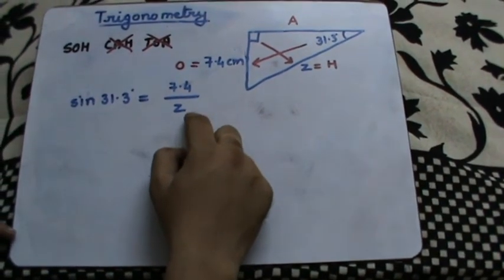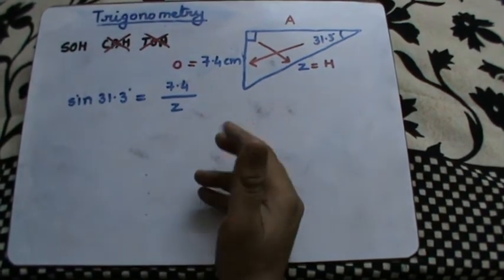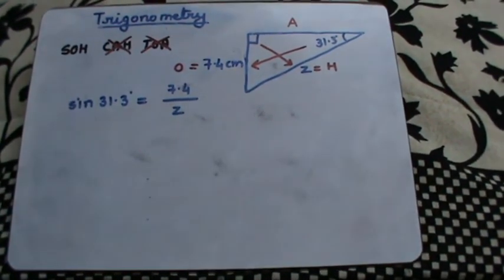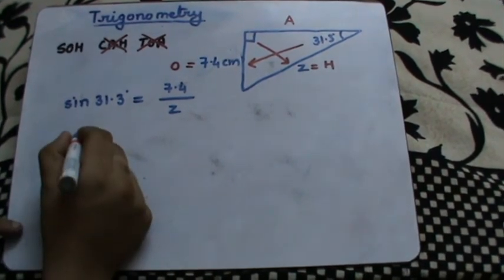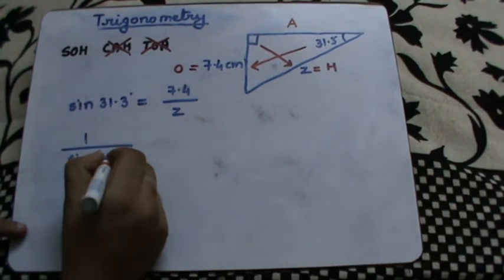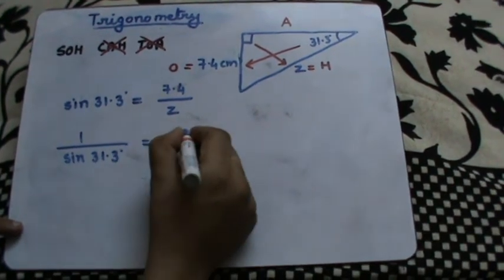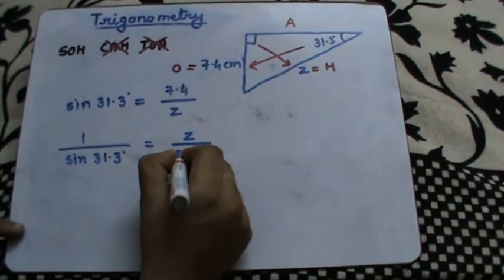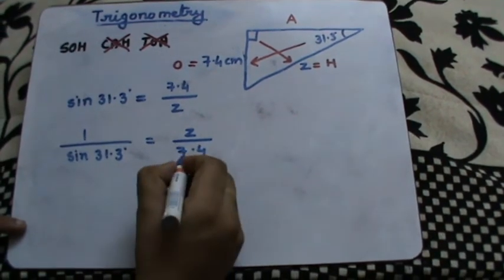Taking the reciprocal on both sides, I get 1 over sin 31.3° equals Z over 7.4. Now when I cross multiply, what I get is 7.4 over sin 31.3° equals Z.